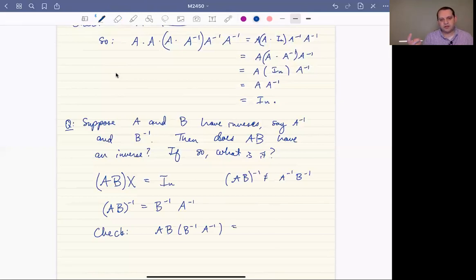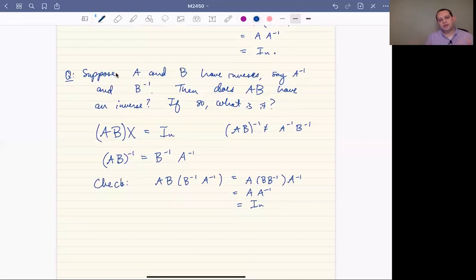So if we were to take AB and multiply by B inverse times A inverse, we could do a few things. One is we could start by using the associative property, multiply B times B inverse. We know that that's going to be the identity, and so that's going to leave us with A times A inverse, which is the identity.